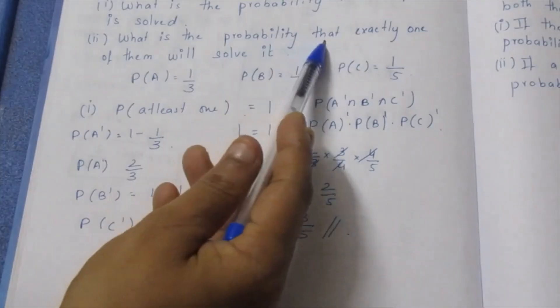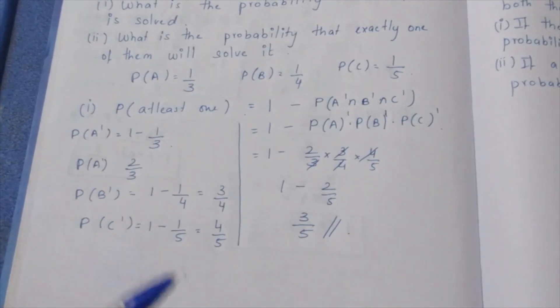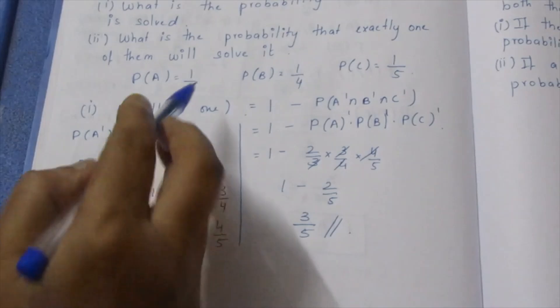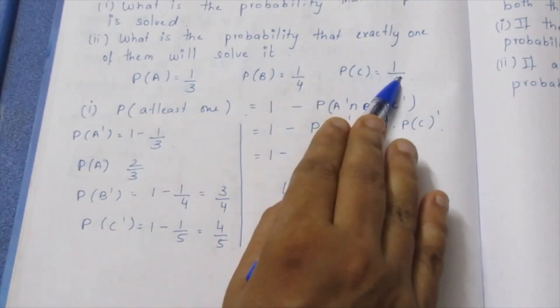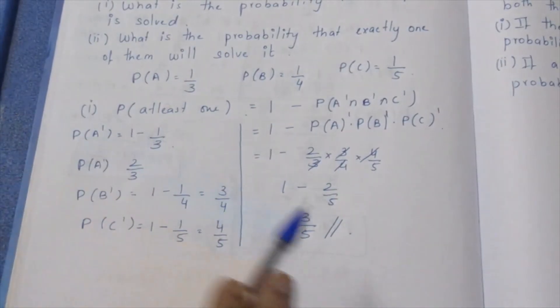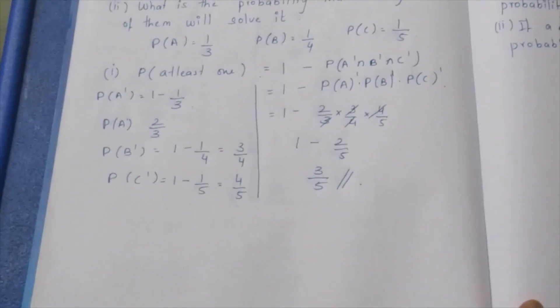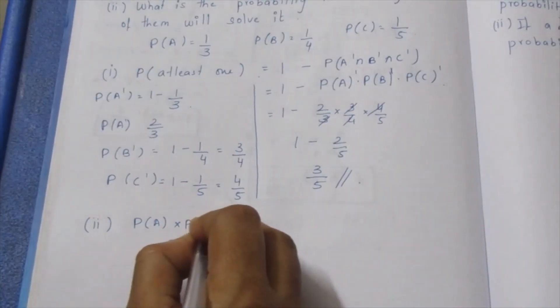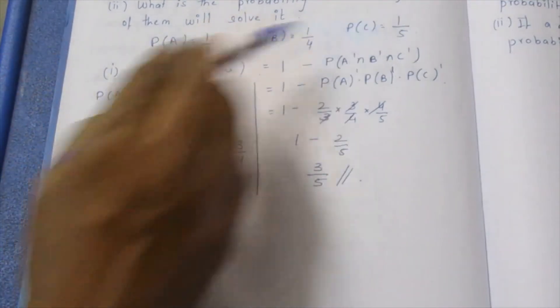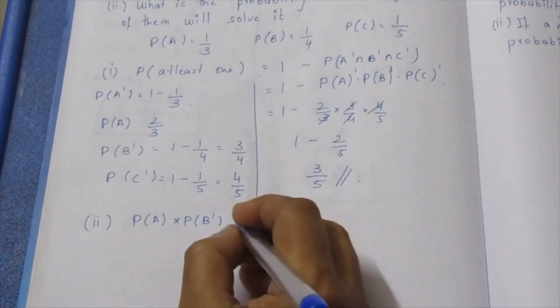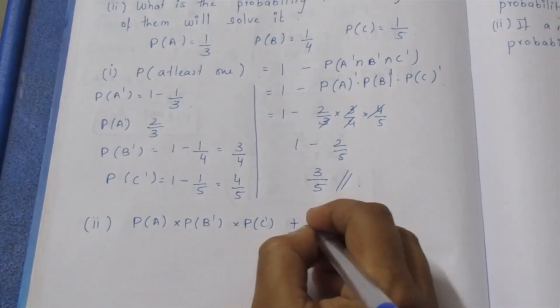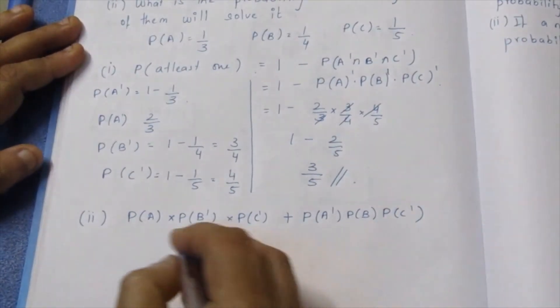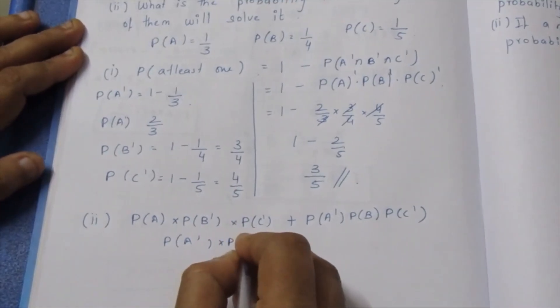Second, what is the probability that exactly 1 of them will solve it? 1 is equal to solve it. If A is solved, B and C is not solved. If B is solved, A and C is not solved. If C is solved, A and B is not solved.